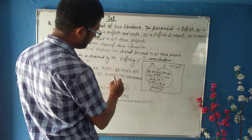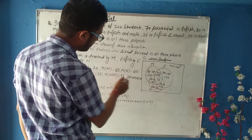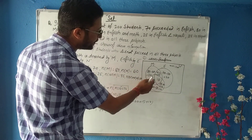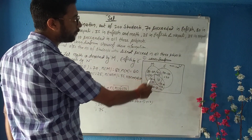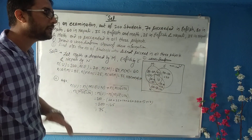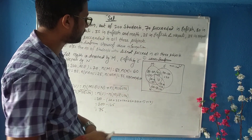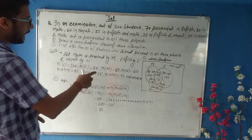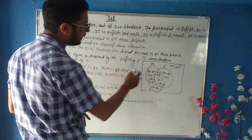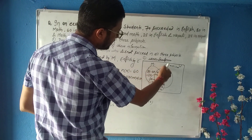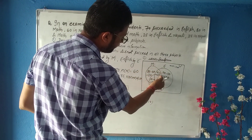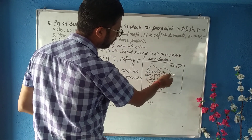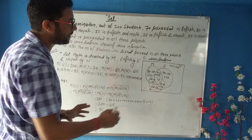N∩M only = 35 minus 10 = 25. For English only: n(E) = 70, and the parts already placed are 25, 15, and 10, totaling 50. So English only = 70 minus 50 = 20. Similarly, we find the only-Math value: n(M) = 80, subtract 25 + 25 + 10 = 60, giving 80 minus 60 = 20. We calculate Nepali only similarly.